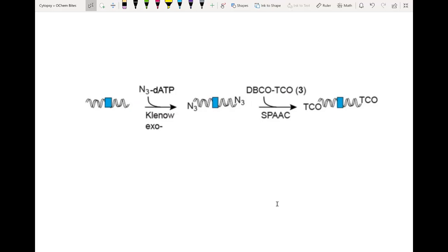The next step utilizes both an enzymatic and chemical method. Double-stranded DNA shown here with blunt ends can be extended with azide dATP using an E. coli DNA polymerase lacking the three prime to five prime exonuclease activity, and that's depicted here.